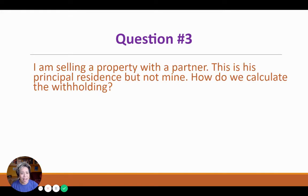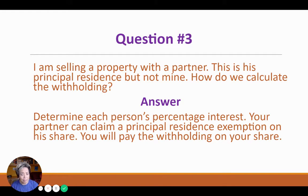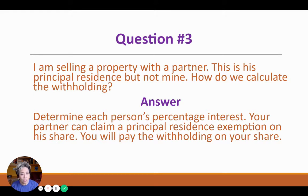Question number three: I am selling a property with a partner. Now this is his principal residence, but it's not mine. How do we calculate the withholding? Again, you need to determine how much interest each of you have. Your partner can claim a principal residence exemption on his share, but if yours is not a principal residence, then you're going to need to pay withholding on your share.